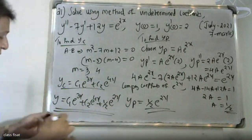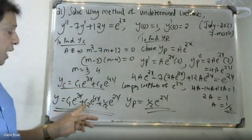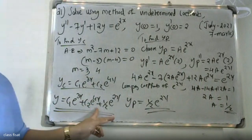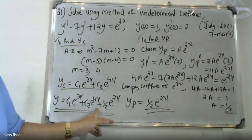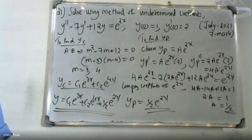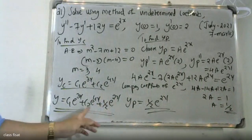Therefore the general solution y equals c1·e^(3x) plus c2·e^(4x) plus 1 by 2 times e^(2x). This is the answer.